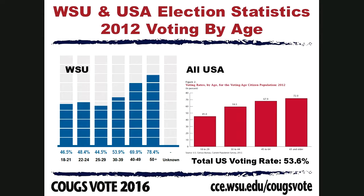Looking at WSU compared to the whole United States, broken down by age: 46.5% of 18 to 21-year-olds at WSU voted, which is comparable to the 45% of all 18 to 29-year-olds who voted in the whole United States. The total US voting rate is 53.6%, so as a WSU system, we are actually voting below the whole US voting rate.